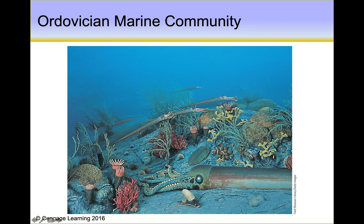Another feature of the Ordovician is we have lots of benthic organisms — these twig-like organic benthic organisms are bryozoa. We talked about these filter-feeding benthic organisms in the earlier video. Bryozoa made up most of the reefs during the Ordovician period. During the Cambrian, the reefs consisted of archaeocytha, but by Ordovician time the archaeocytha had disappeared and the bryozoans took their place to dominate the reefs.